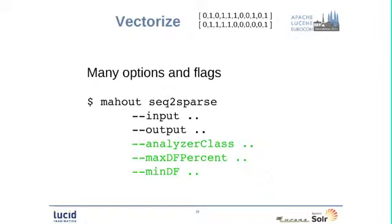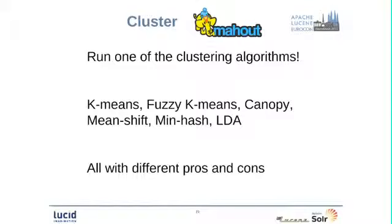So seq2sparse has quite a lot of options. Like I said, you can specify your analyzer. You can specify a maximum document frequency percentage. So if you set this value very low, then it means that frequent terms will be pruned out of the vectors. And so this will prevent a lot of stop words from occurring into your cluster. You can also specify minimum document frequency for the vectorization.